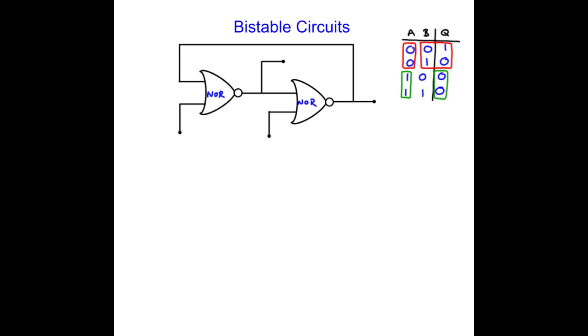So we're going to first of all label it. This is our output q. This therefore is our output q bar. This is our set input, which we're going to call s, and this is our reset input, which we're going to call r.